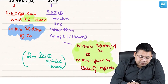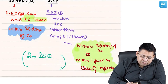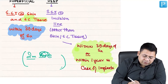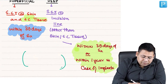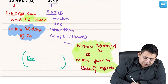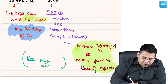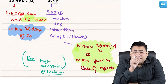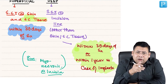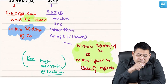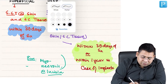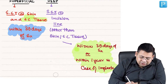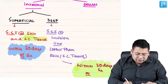For skin and subcutaneous tissue, whether implant or non-implant, the window remains 30 days. However, if after eight months of an implant surgery there is myonecrosis along the incision — involving deeper tissue — it is still SSI, because the deeper parts of the incision are covered within one year for implants.